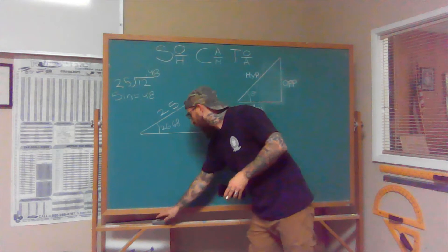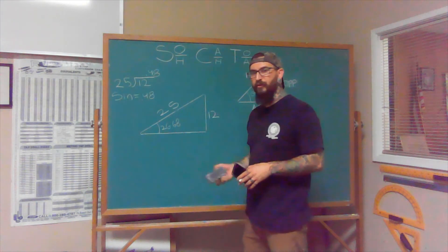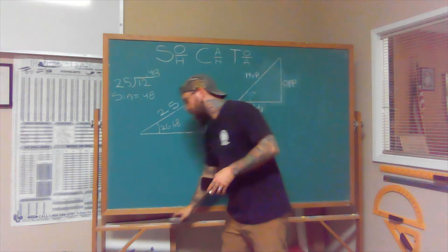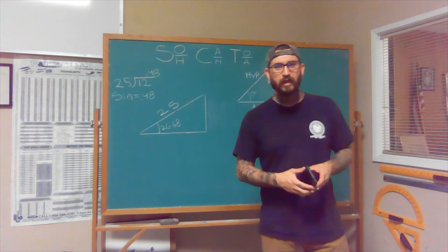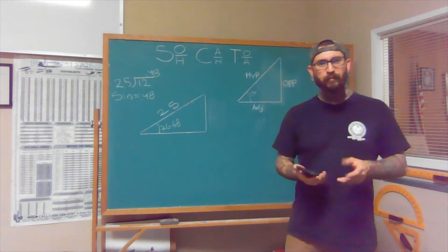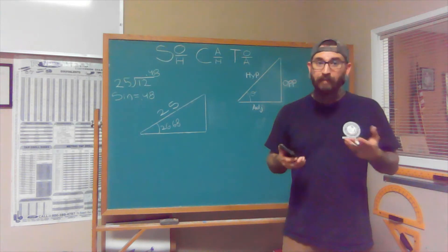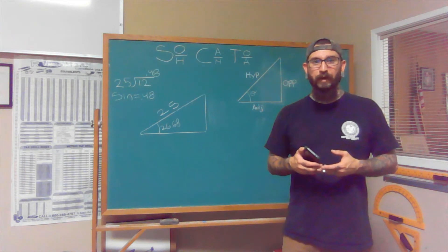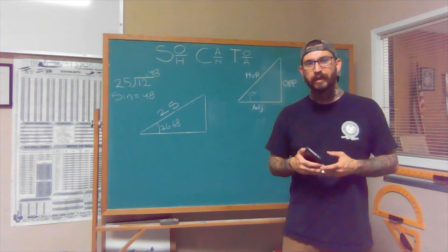But what if we were given the angle and the hypotenuse, and we needed to figure out the opposite? Because more often than not, that's the problems I come across out in the field. It's not so much that I have to find out an angle. Usually blueprints are pretty good about giving us an angle for something, not very good about giving us lengths and sides. That's usually field verified. So I'm going to move the camera over, and we're going to take a look at another example.